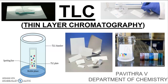This is the glass slide on which silica gel is poured as a uniform surface to form a stationary phase. This silica gel plate acts as a stationary phase, on which the spots are plotted and then dipped in a mobile phase or a suitable solvent.